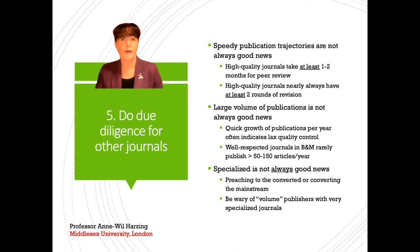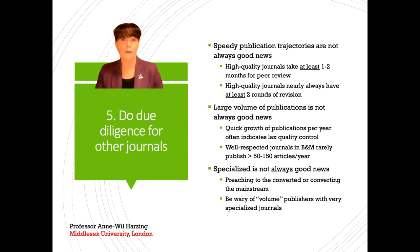Another signal to watch is a journal rapidly increasing its number of publications — going from 100 publications 10 years ago to 800 or 900 now is usually not a great sign of quality. Finally, while publishing in a highly specialized journal might increase your chances of acceptance, it also means your audience is similarly specialized and fairly small. If you want to bring your topic to a mainstream audience, publishing in a really specialized journal is not the best way to do this.